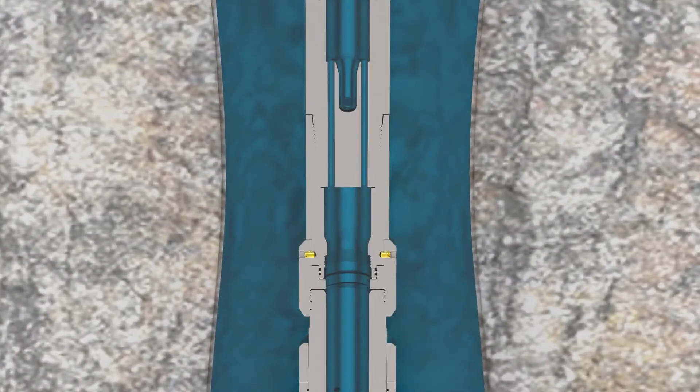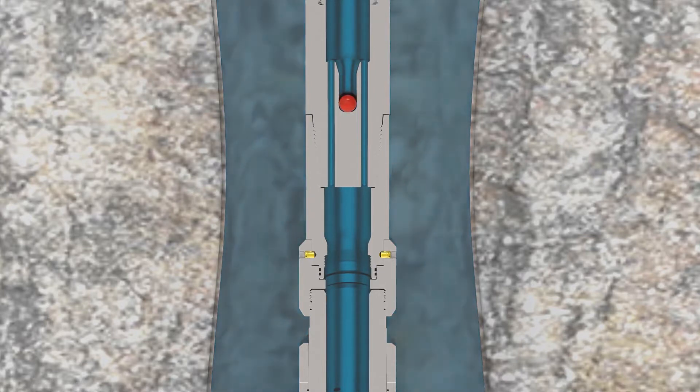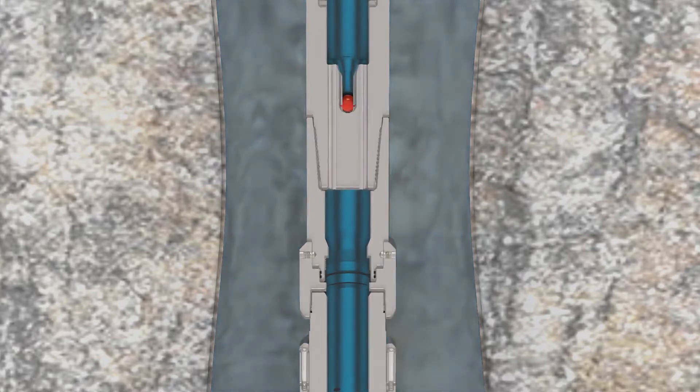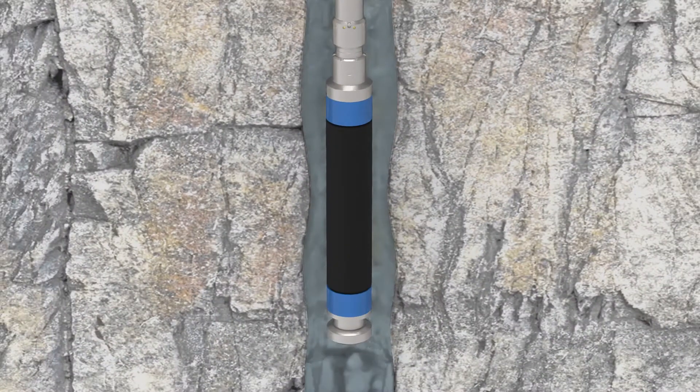Once setting depth has been established a setting ball is dropped to isolate the tubing from the wellbore and allow the hydraulic inflation of the element to be initiated.